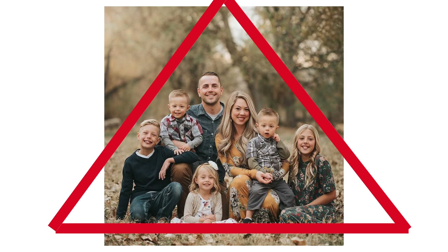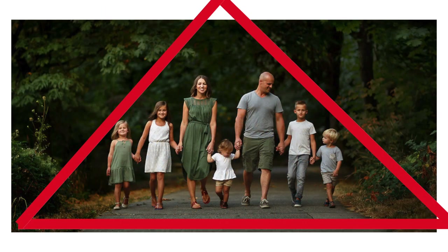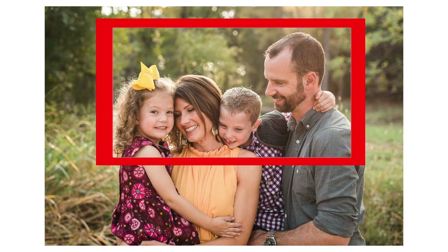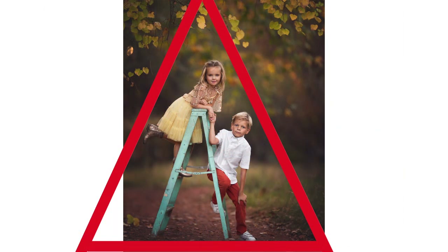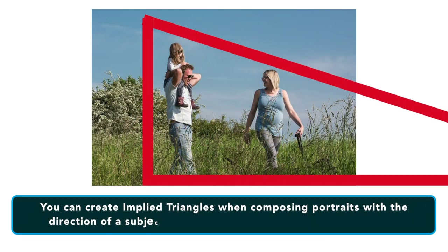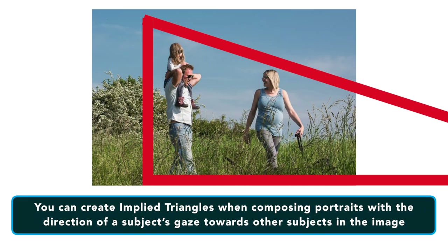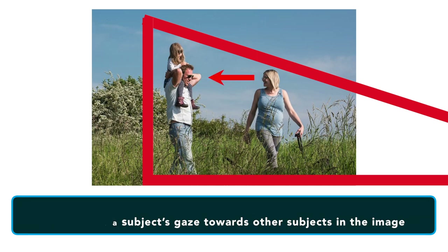One such method is with the arrangement of subjects in an image or scene that you shoot. With both formal and informal family photography poses, you can group the family often in the form of a triangle, and this is more interesting than a solid square or rectangle of people in a line. The triangle shape is pleasing to look at, but it allows the eye to travel around the group. You can even imply a triangle when composing portraits with the direction of a subject's gaze towards the other subjects in the image.